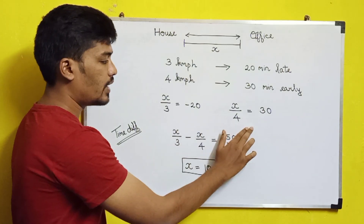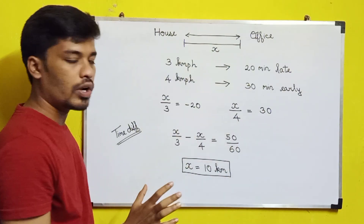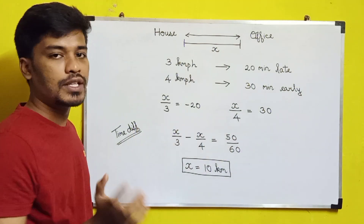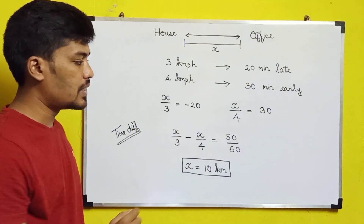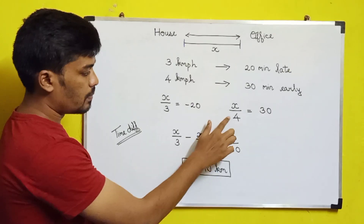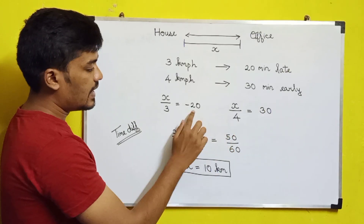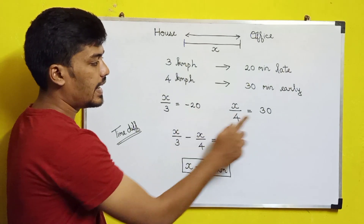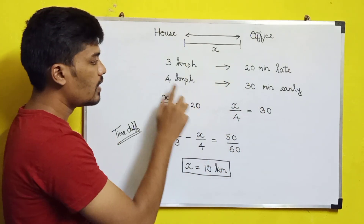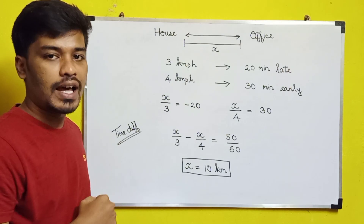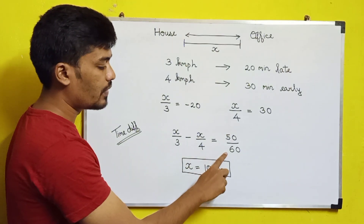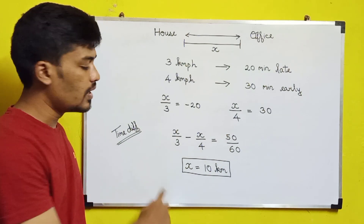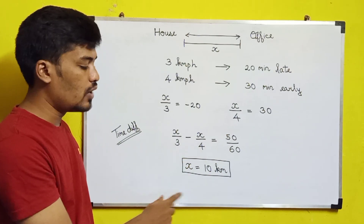We calculate the time difference: x/3 minus x/4 equals 50 minutes total difference. Converting 50 minutes to hours and solving gives us the value of x — the distance between the house and office.